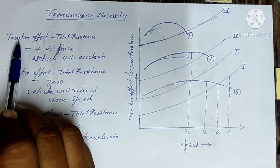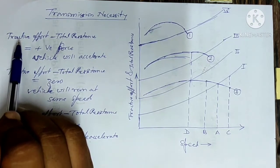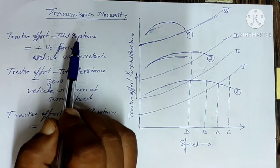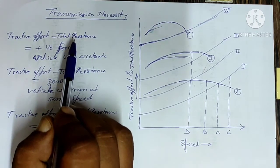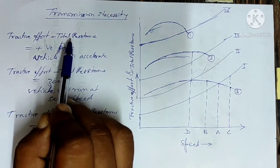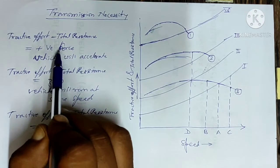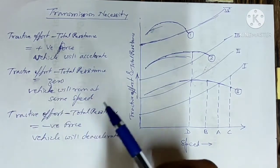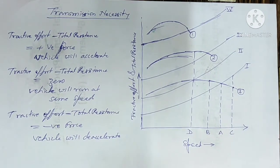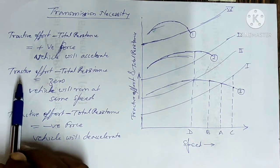Tractive effort is the force which you are applying to move the vehicle, and the total resistance is the force which tries to stop the motion. If tractive effort minus total resistance is positive, then the vehicle will accelerate — you are applying some net force, so from Newton's second law, mass into acceleration, the force is positive, so acceleration will be positive.